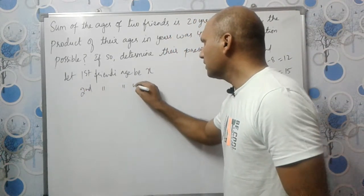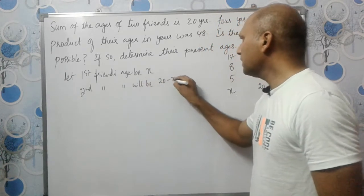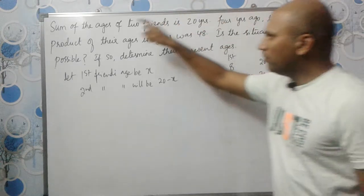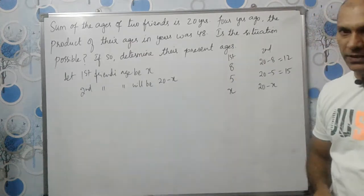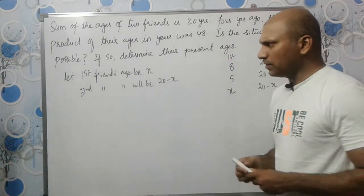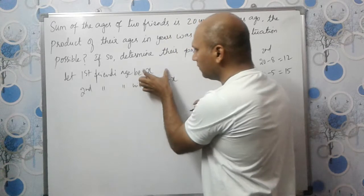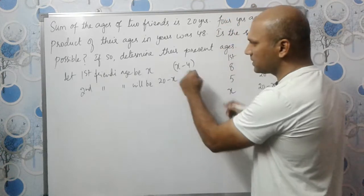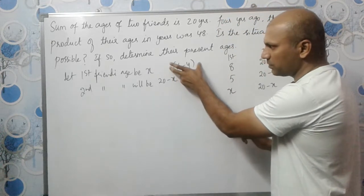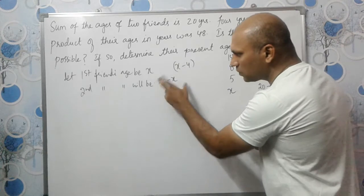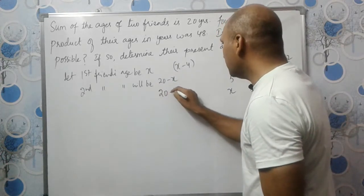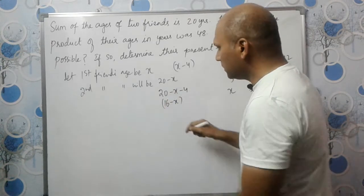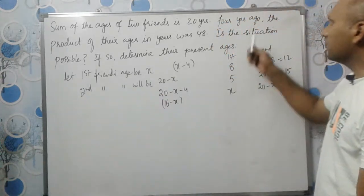Now, 4 years ago the product of their ages was 48. The present age of the first friend is X, so 4 years ago he will be 4 years younger, that means X minus 4. The second friend will also be 4 years younger: 20 minus X minus 4, which gives us 16 minus X.